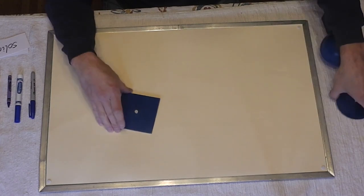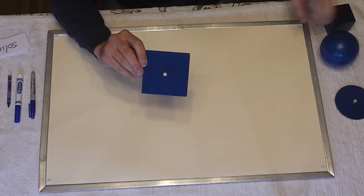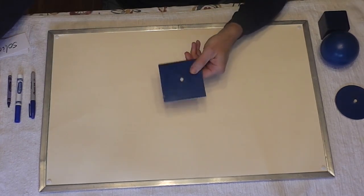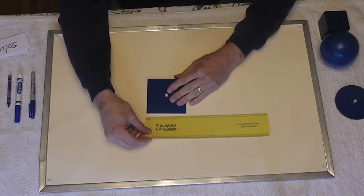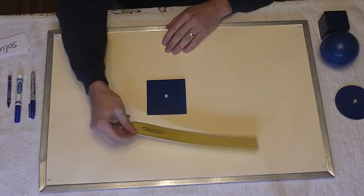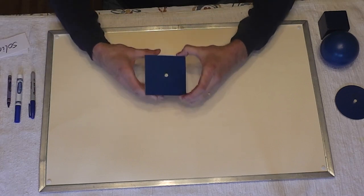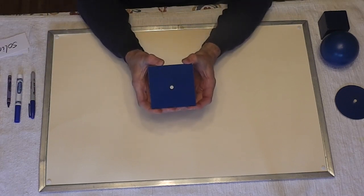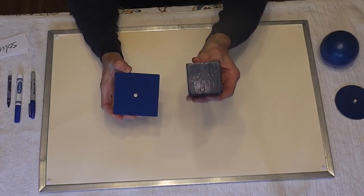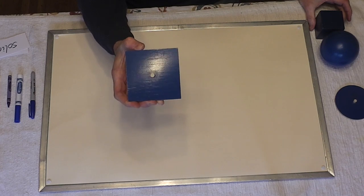We can measure the surface. Where we measured three dimensions with the cube, we can only measure two dimensions of the surface. We have its length, and we have its width. So surface is two-dimensional. Cube, three-dimensional or 3D. Surface, two-dimensional or 2D.